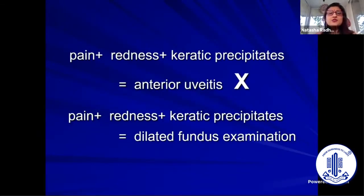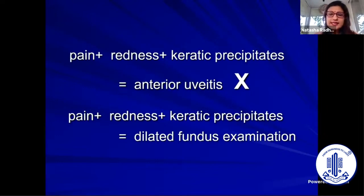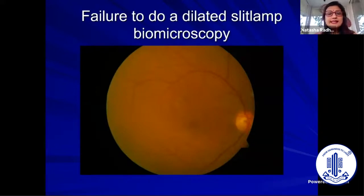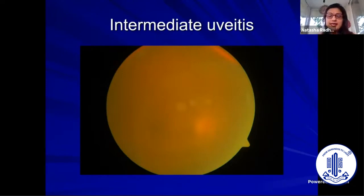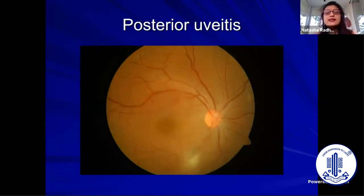A lot of information comes from a proper slit-lamp examination without just diagnosing anterior uveitis and starting to treat. When you see keratic precipitates, pain, and redness and diagnose anterior uveitis, that is wrong — because whenever you suspect anterior uveitis, you must first dilate and look at the fundus to ensure you have not missed anything going on behind the lens. Failure to do a dilated slit-lamp biomicroscopy means you will miss posterior segment complications, including cystoid macular edema.